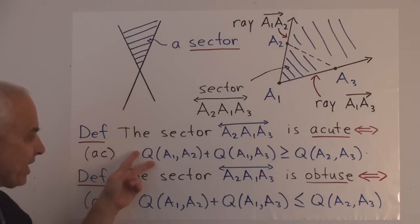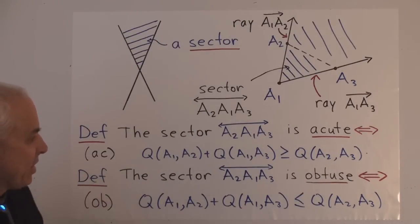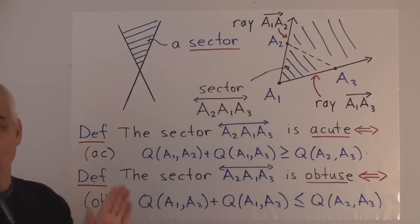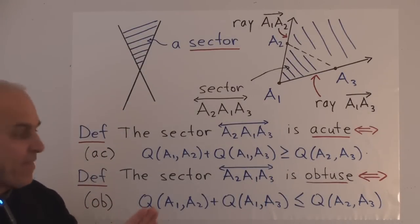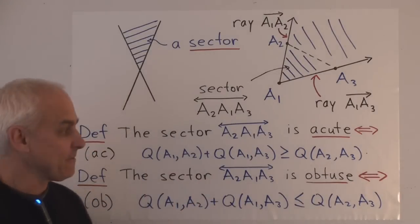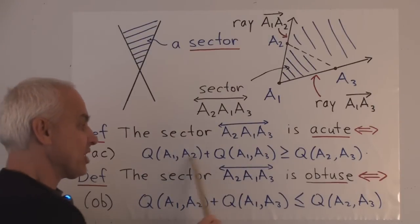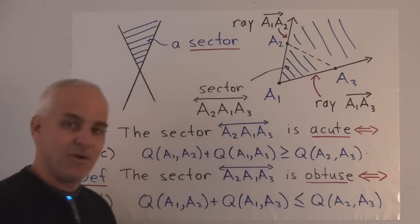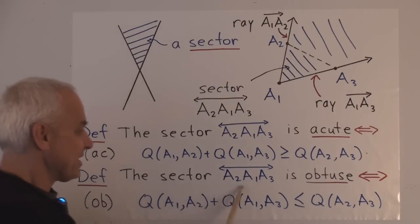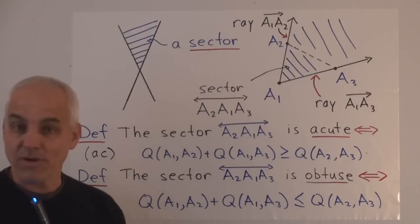This kind of relation actually goes back to Euclid, because Euclid realized that when we have equality, that's the case of a right triangle. The right triangle is halfway or balanced between the acute and the obtuse, and the difference between the acute and the obtuse is just which way the inequality goes. Similarly, we say that the sector is obtuse when we have exactly the same relation but with the inequality reversed.